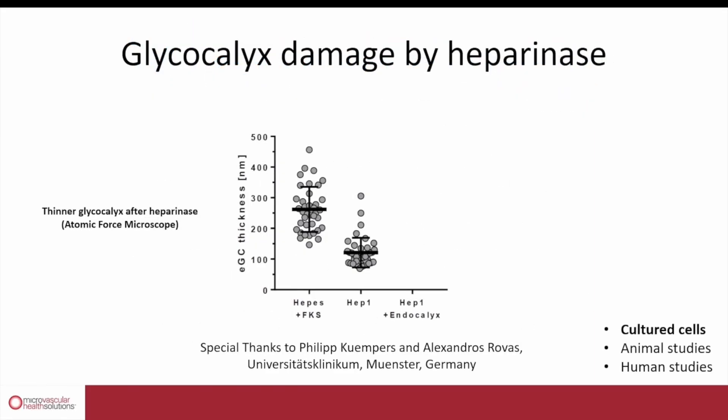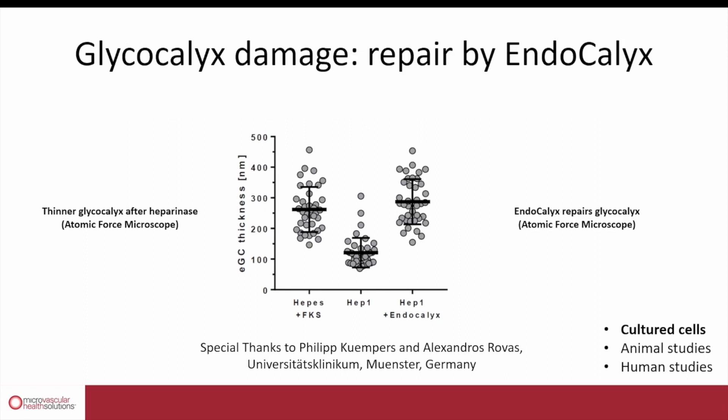Some data on cultured endothelial cell studies in which we measured the dimension of glycocalyx with an atomic force microscope device. With that, you can actually measure the dimension of glycocalyx on these cultured cells. This slide shows you that the reference level of glycocalyx to start with — if you add the enzyme heparinase, it can significantly damage your glycocalyx, resulting in a much smaller glycocalyx and a much more vulnerable microvascular system. If you add Endocalyx to the endothelial cells, you can see that you can completely protect the endothelium and prevent the damage by the heparinase enzyme.